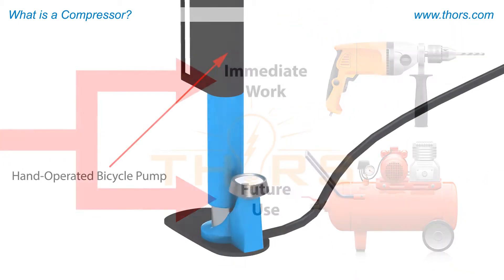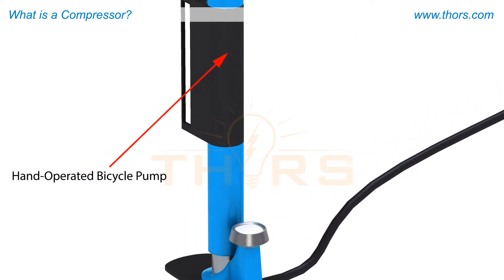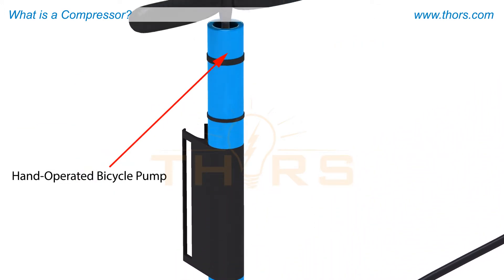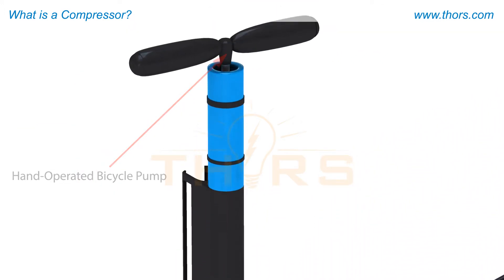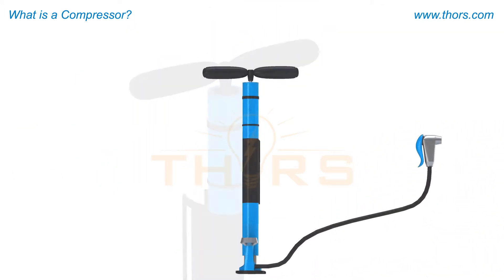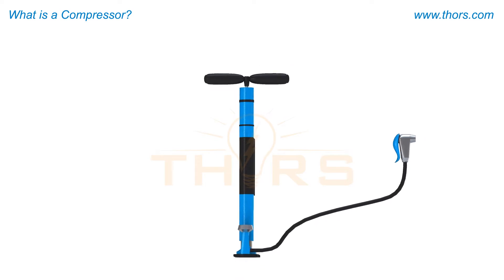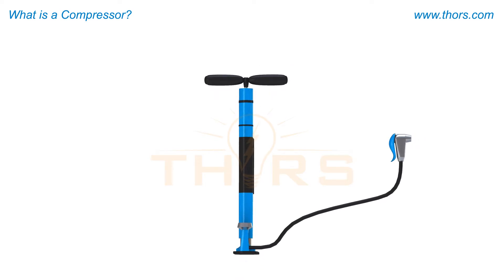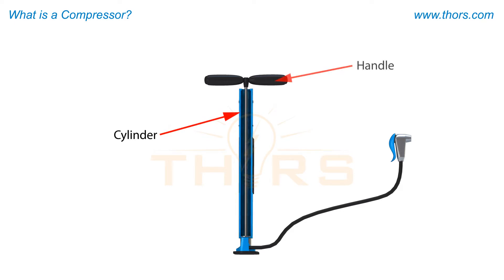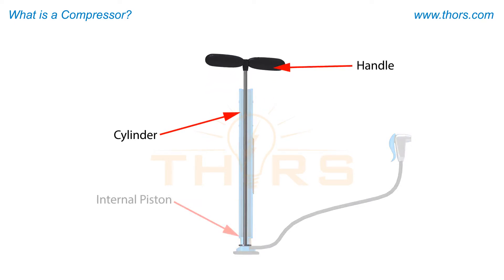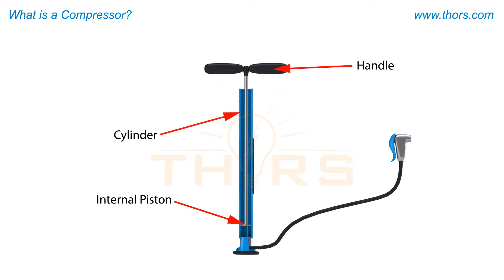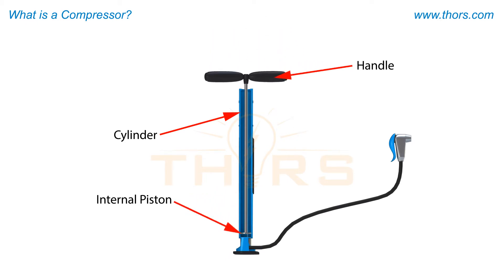An example of how a compressor operates can be demonstrated by a hand-operated bicycle pump. For this simple compressor, the pump consists of a long metallic tubular cylinder and a handle to move the internal piston back and forth within the cylinder.